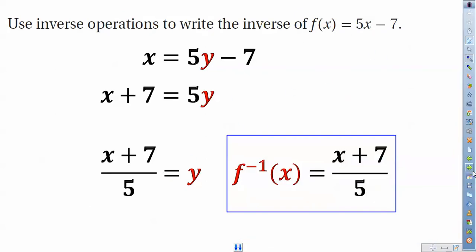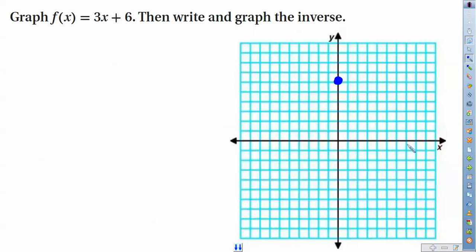If we were to graph 3x plus 6, remember we have our y-intercept already in place there of 6, and then our slope was 3, so we got to go up 3 and over 1, or we can reverse it. So here we go reverse...